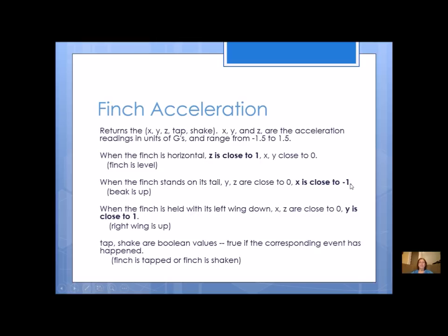This is going to be some helpful information to you — what if the beak is down, what do you think X would be close to? When the Finch is held with its left wing down, meaning the right wing is up, X and Z are close to zero but Y is close to 1. Think about what Y would be close to if the left wing is up. Tap and shake are just booleans — they're going to be true or false, not an integer or a float.